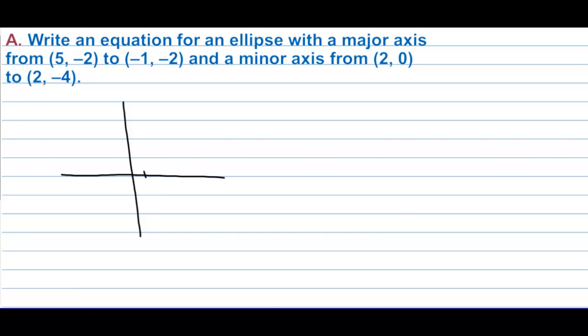We plot (5,-2) and (-1,-2). There is the major axis.